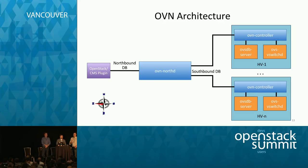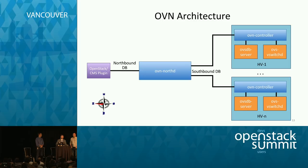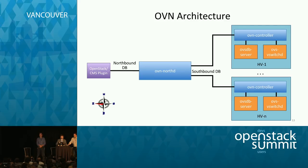Q: How does OVN interact with the L3 agent — does it interfere with flow tables 3, 4, 5 that the L3 agent and DVS use? A: It works — OVN uses a separate bridge for most of the programming, so it shouldn't interfere. Thank you all very much.